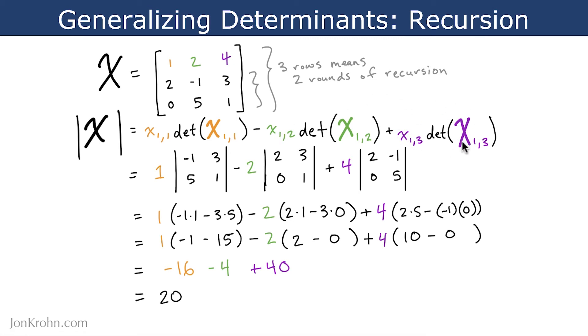And then our final term here is X13, this 4, multiplied by this determinant of X13. And again, X13 is these four values because these four values aren't in the same row or column as the 4. Alright, so now we have our three terms.